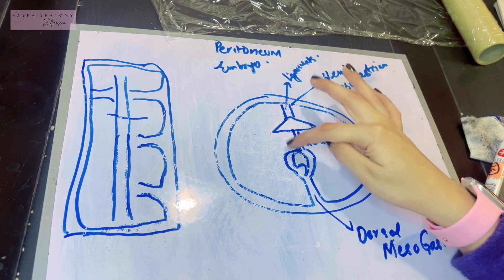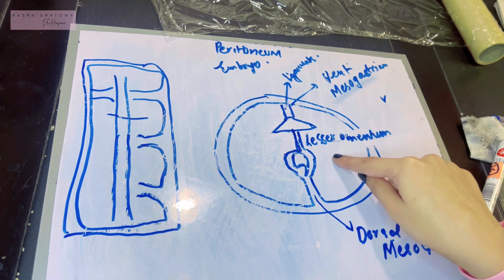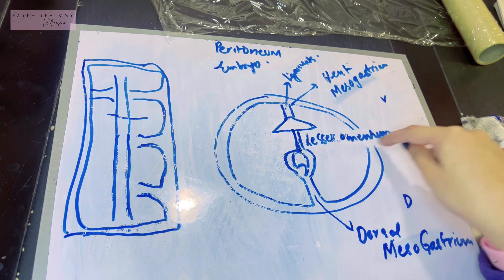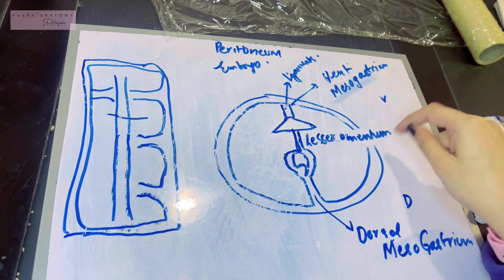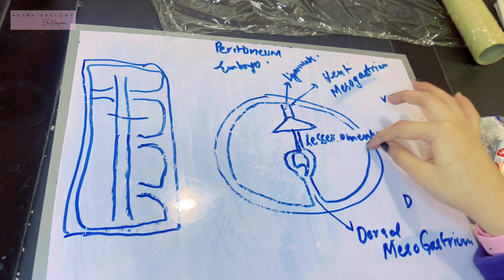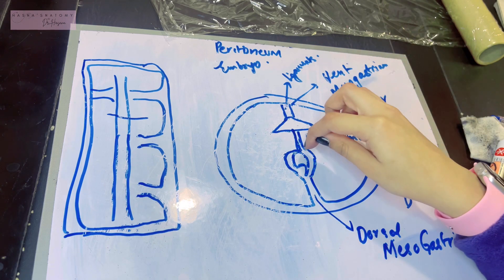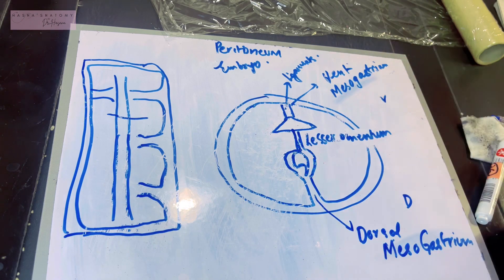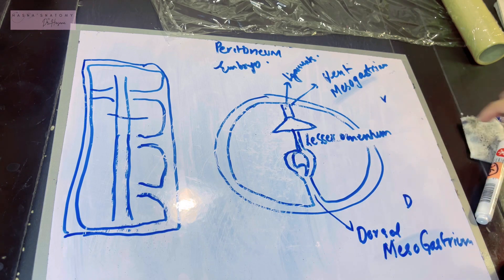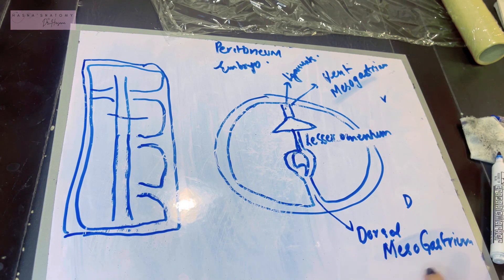The dorsal part of the ventral mesogastrium becomes the lesser omentum. To be an omentum, it must be a large peritoneal fold attached to the stomach — so that is how the lesser omentum comes into existence.